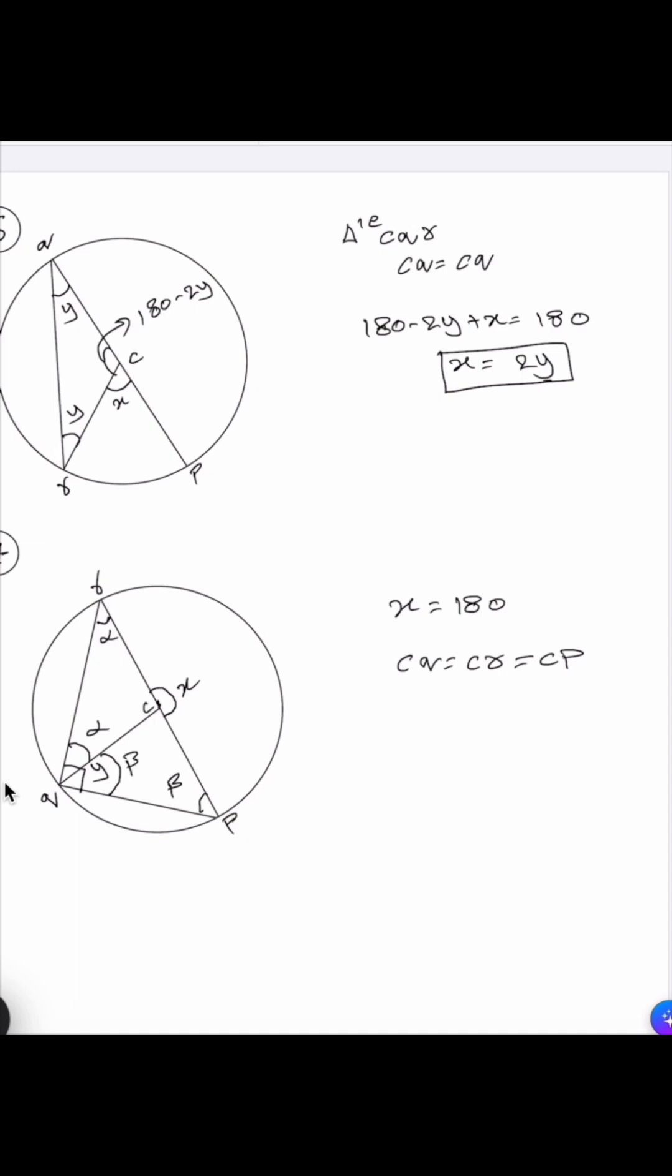Now we know sum of angles in a triangle is 180 degrees. Angle P plus angle Q plus angle R equals 180 degrees. So alpha plus beta plus alpha plus beta equals 180 degrees. Two times alpha plus beta equals 180 degrees. Alpha plus beta equals 90 degrees which equals y. x is twice the times of y.